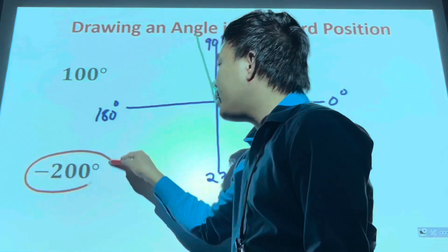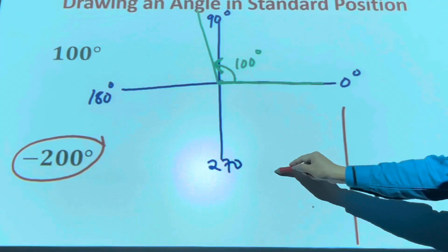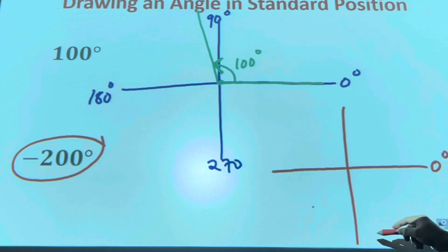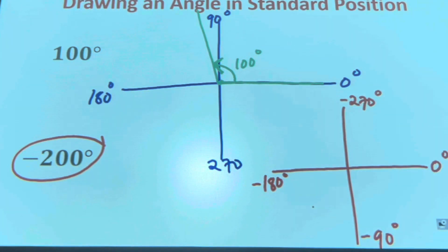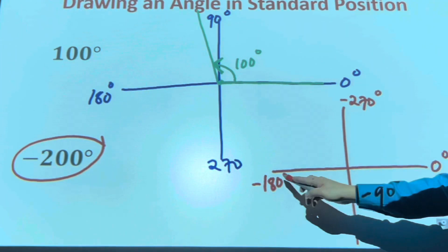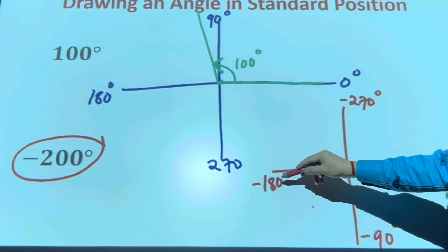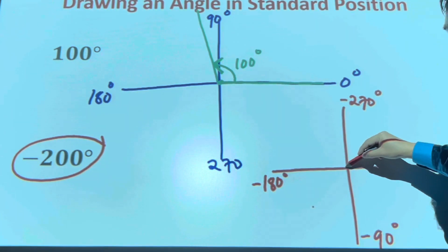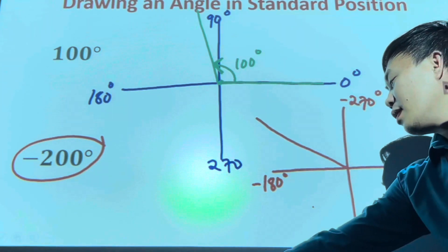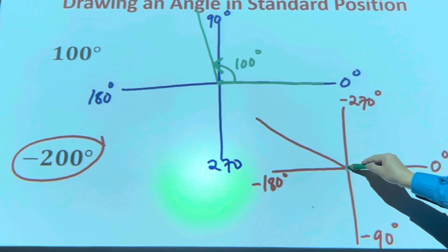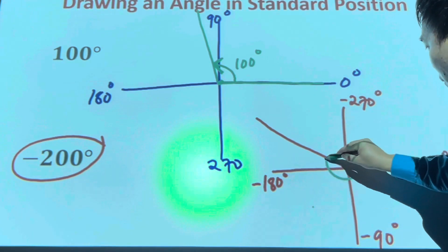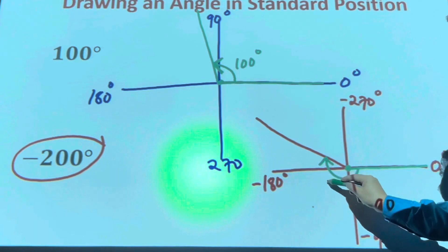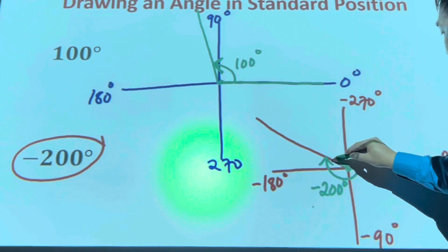Next is negative 200 degrees. Draw the Cartesian plane. Since it's negative, start at zero and go clockwise: negative 90, negative 180, negative 270 degrees. Because it's negative 200, I already have negative 180 and just need 20 degrees more. So the terminal side is approximately here, with the vertex at the origin and the positive x-axis as the initial side rotating clockwise to negative 200 degrees.